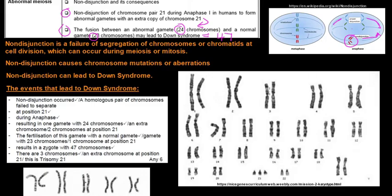The events that lead to Down syndrome — taken from a previous exam paper — are: non-disjunction occurred, or a homologous pair of chromosomes failed to separate at position 21 during anaphase, resulting in one gamete with 24 chromosomes and two chromosomes at position 21. Fertilization of this gamete with a normal gamete of 23 chromosomes results in a zygote with 47 chromosomes, with three chromosomes at position 21. This is known as trisomy 21, which is another name for Down syndrome.